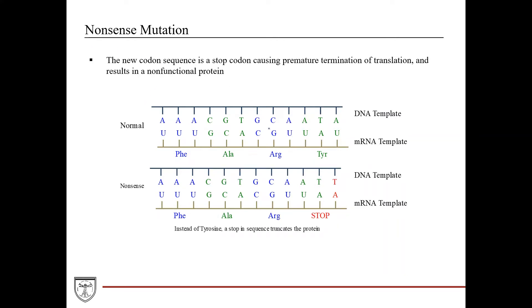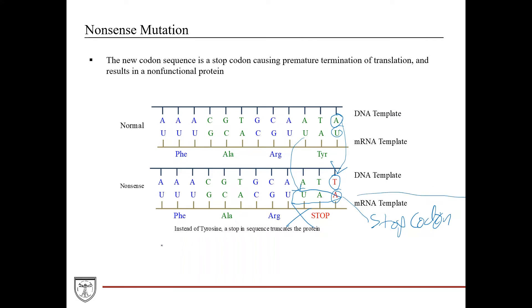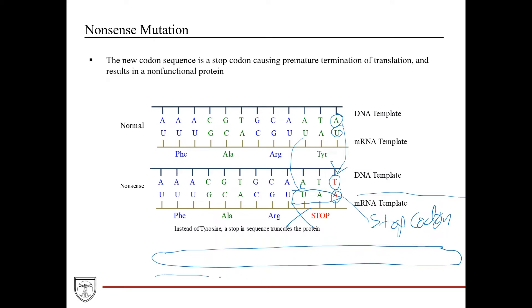With a nonsense mutation, a new codon sequence is generated where an adenine is exchanged for a thymine, changing the codon from UAU to UAA — which is a stop codon. Protein translation stops right there. You could have 15, 50, or 100 codons left to read, but if you hit the stop codon, translation stops. The polypeptide sequence will be much shorter, which can have a significant effect on function or render it non-functional.